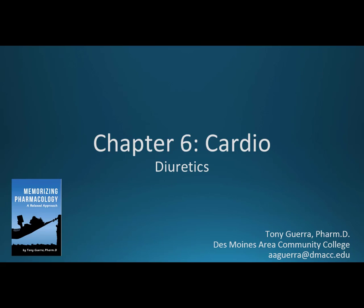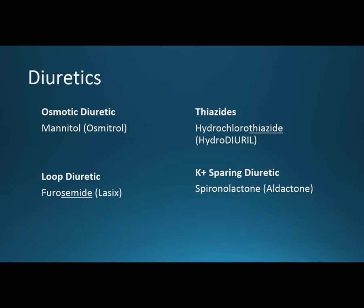We're going to do number six, chapter six, cardio diuretics, and we're going to compare four different classes of diuretics: starting with the osmotic diuretic mannitol, brand Osmotrol; loop diuretic furosemide, brand Lasix; thiazide diuretic hydrochlorothiazide, one of the brand names is Hydrodiaril; and then potassium-sparing diuretic spironolactone, brand Aldactone. There is also triamterene, which you'll see a lot with hydrochlorothiazide, but for simplicity's sake we're going to stick with one.